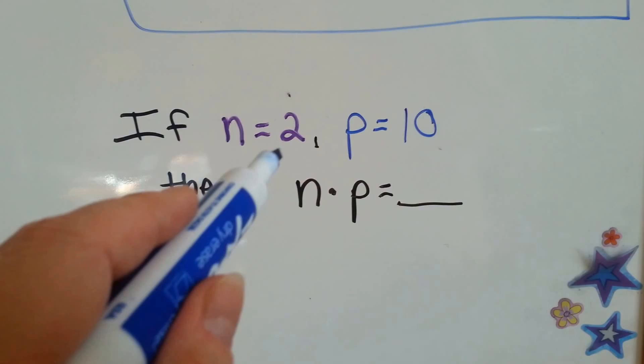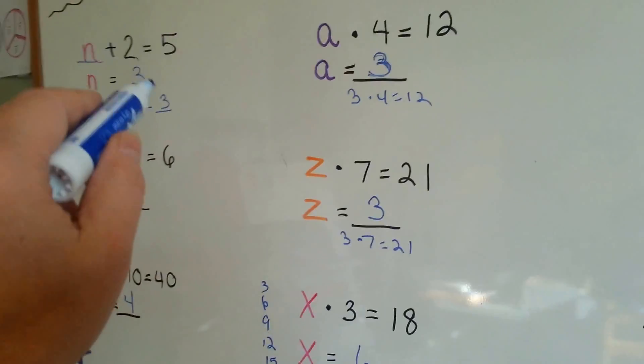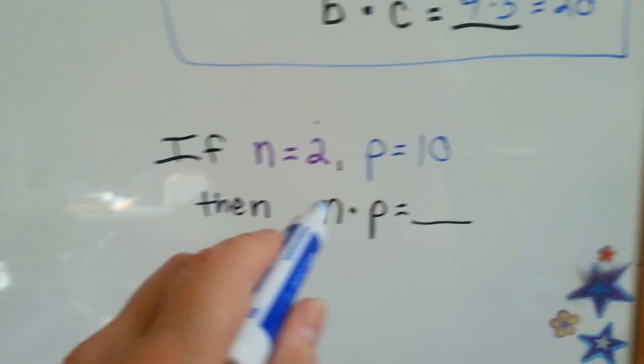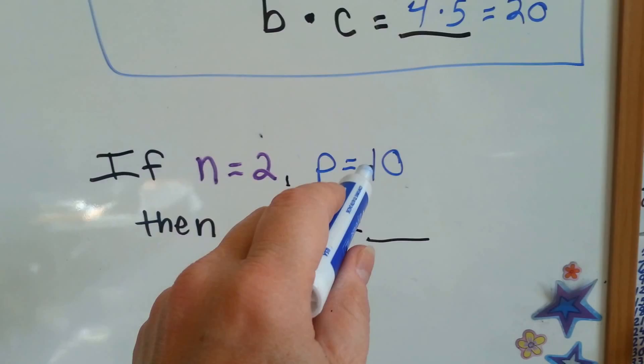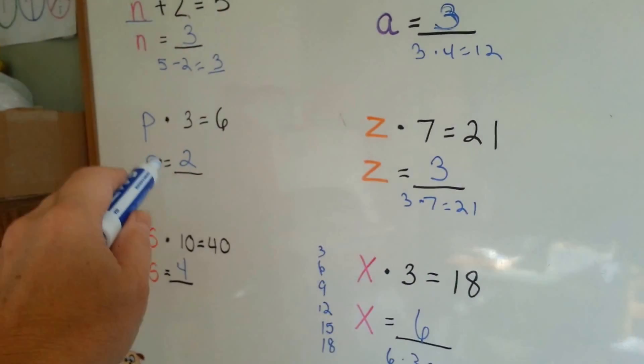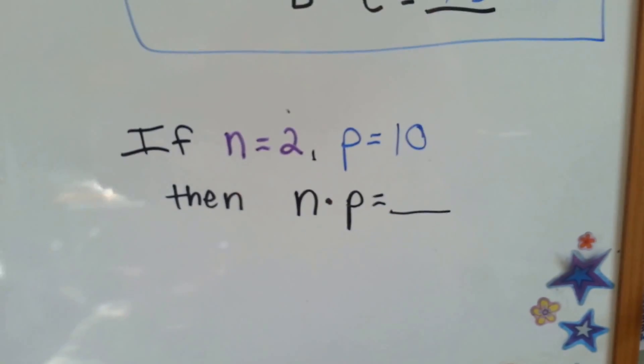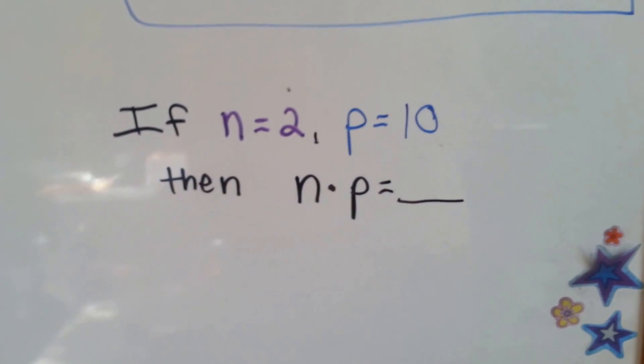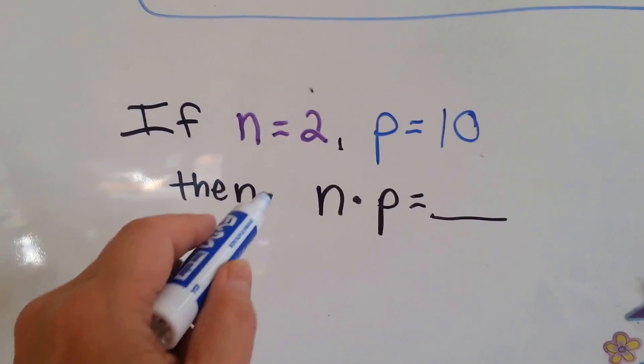Now, in this problem, n is equal to 2. See over here, n was equal to 3. And p is equal to 10. But in that problem, p was equal to 2. So, see how it can vary? Just because they're equal to this now, doesn't mean the next problem they're going to be.